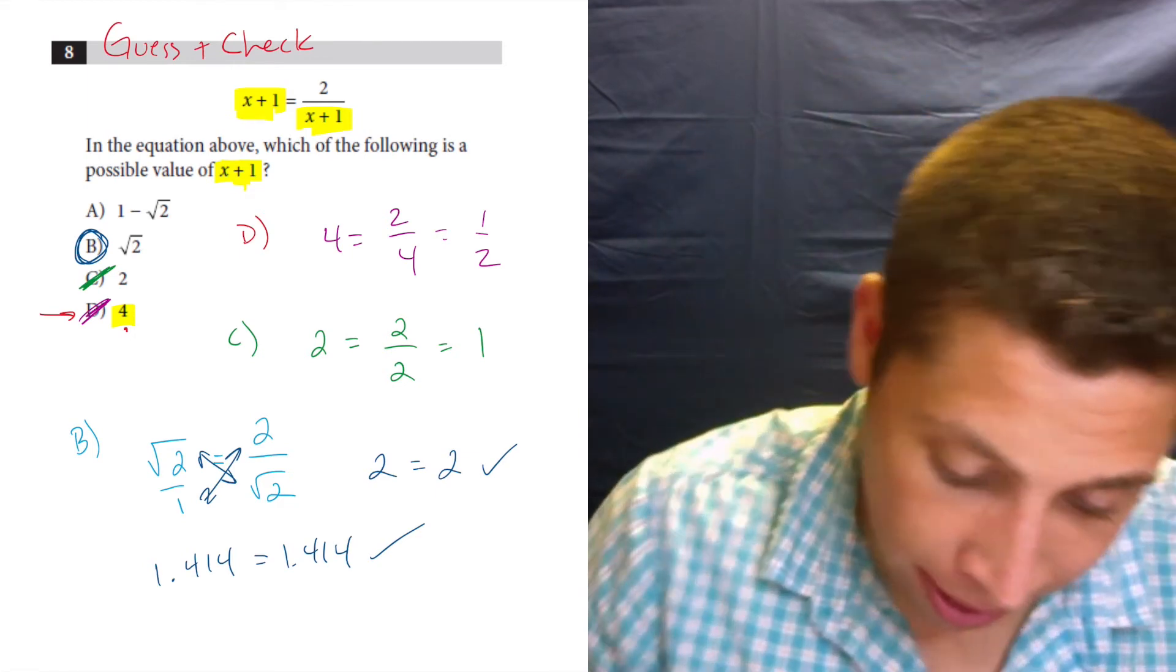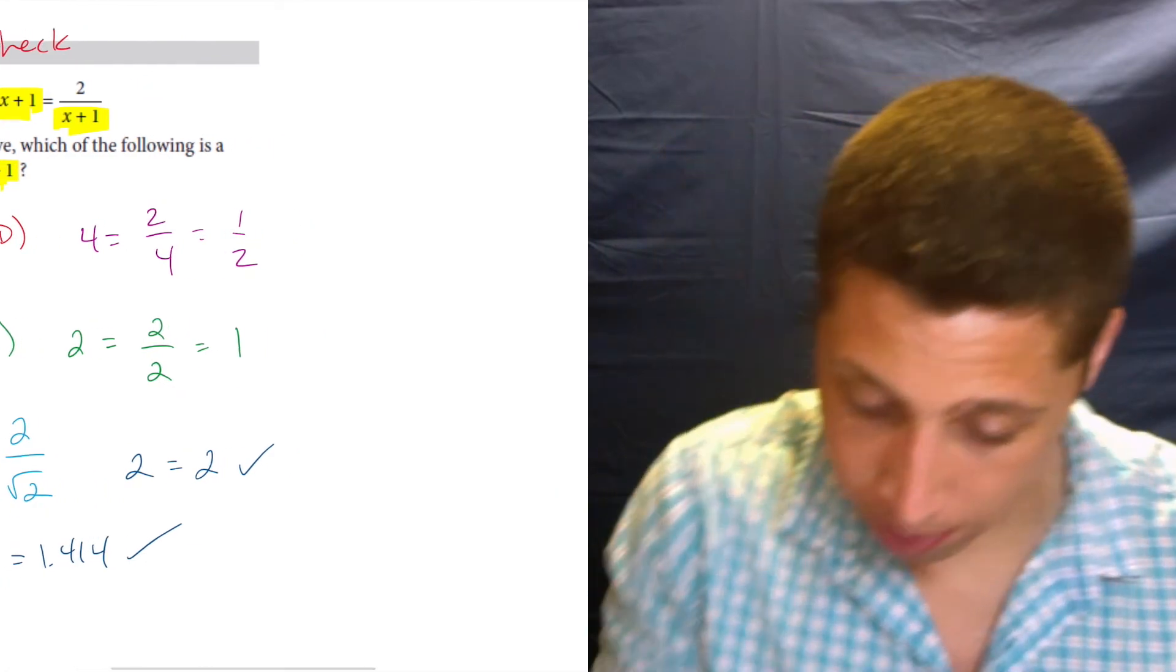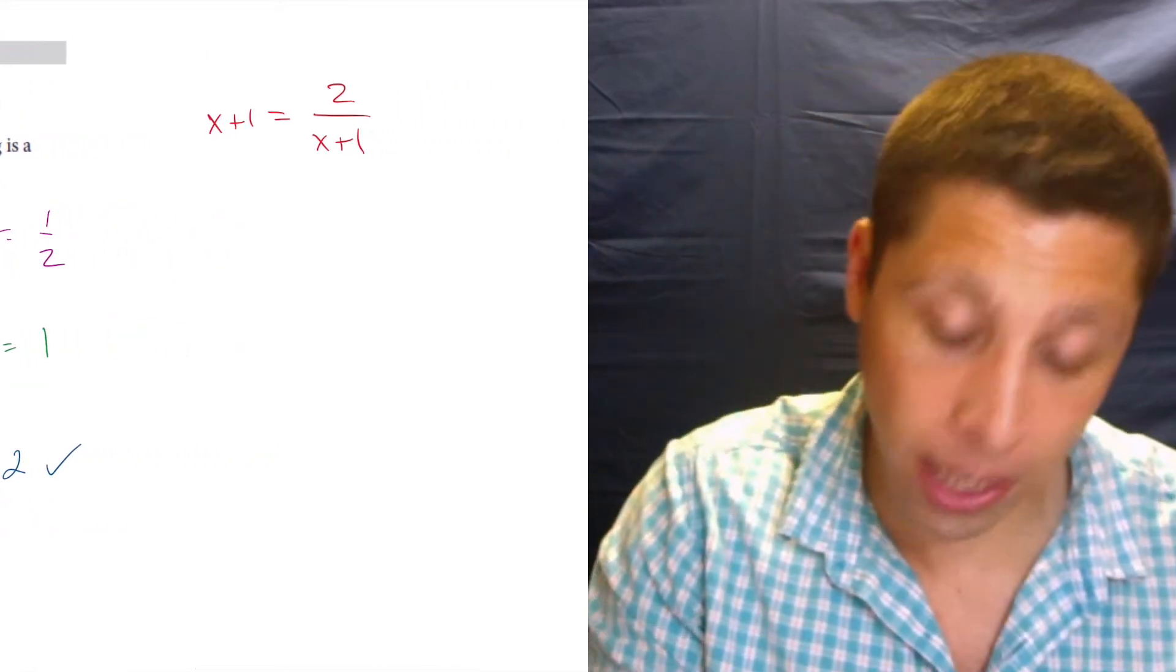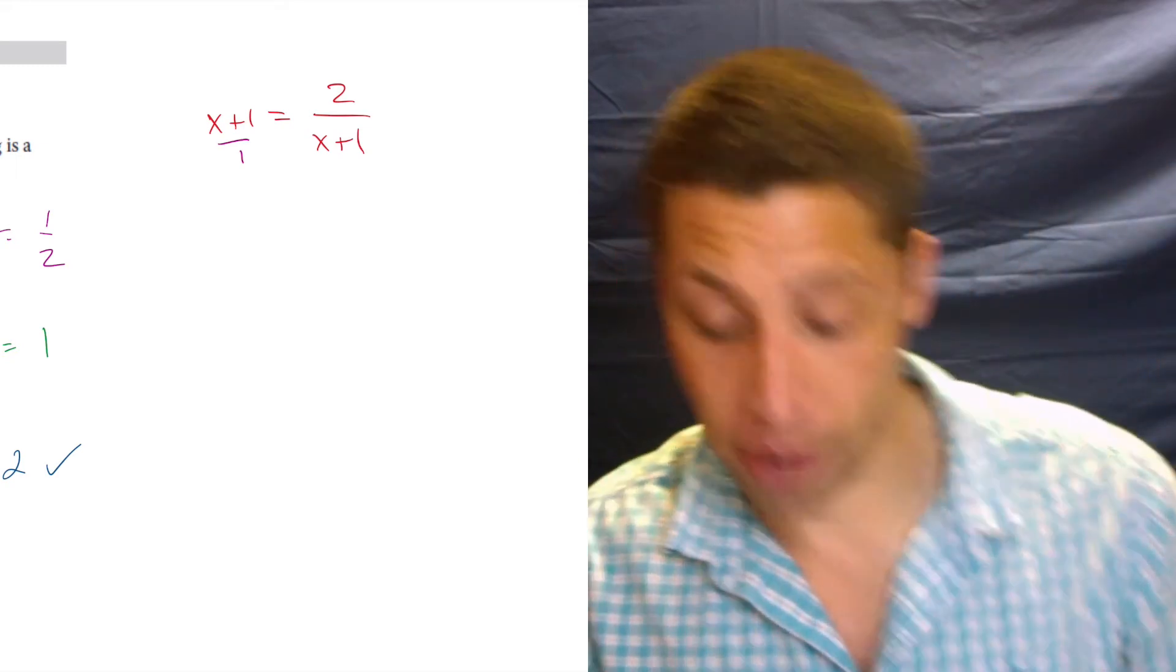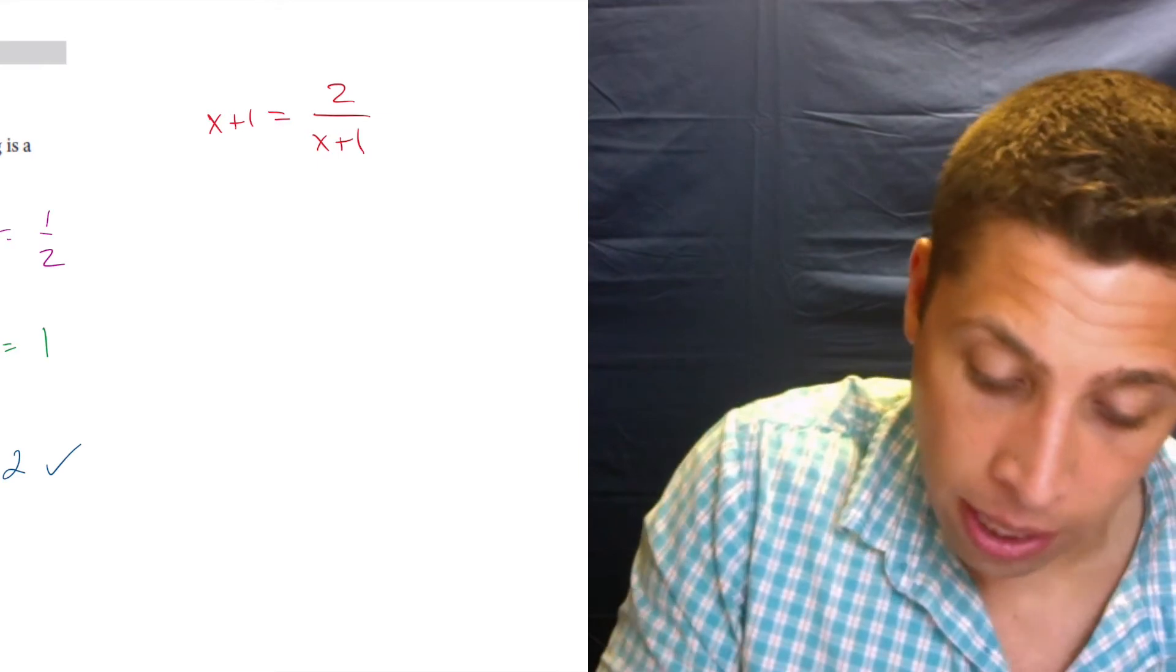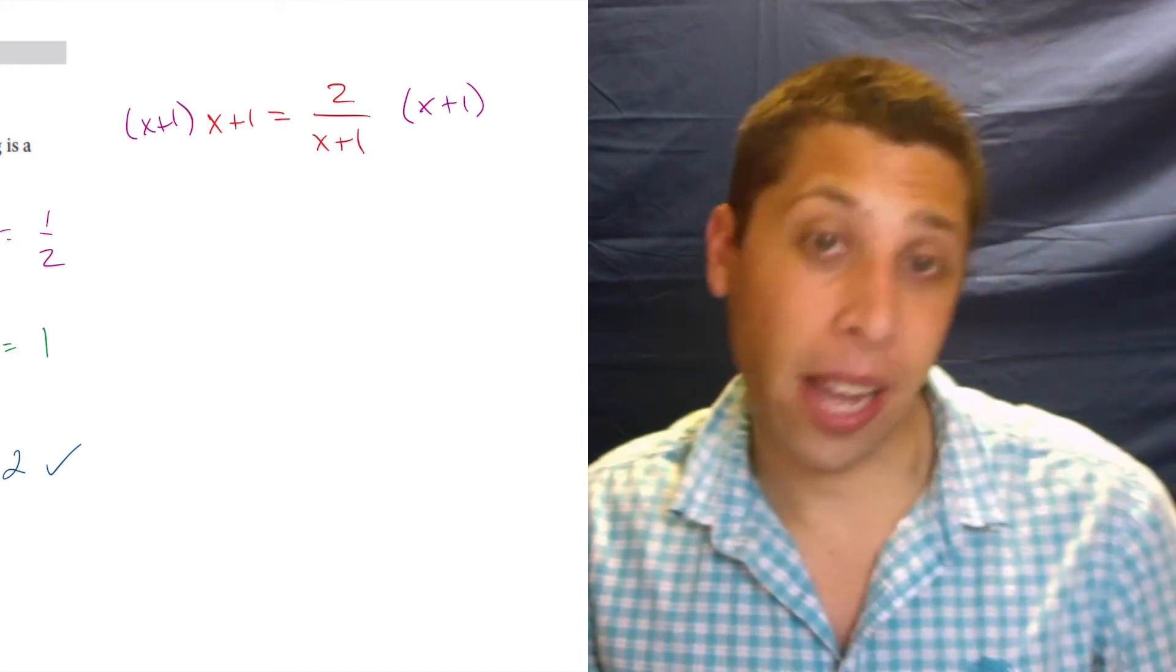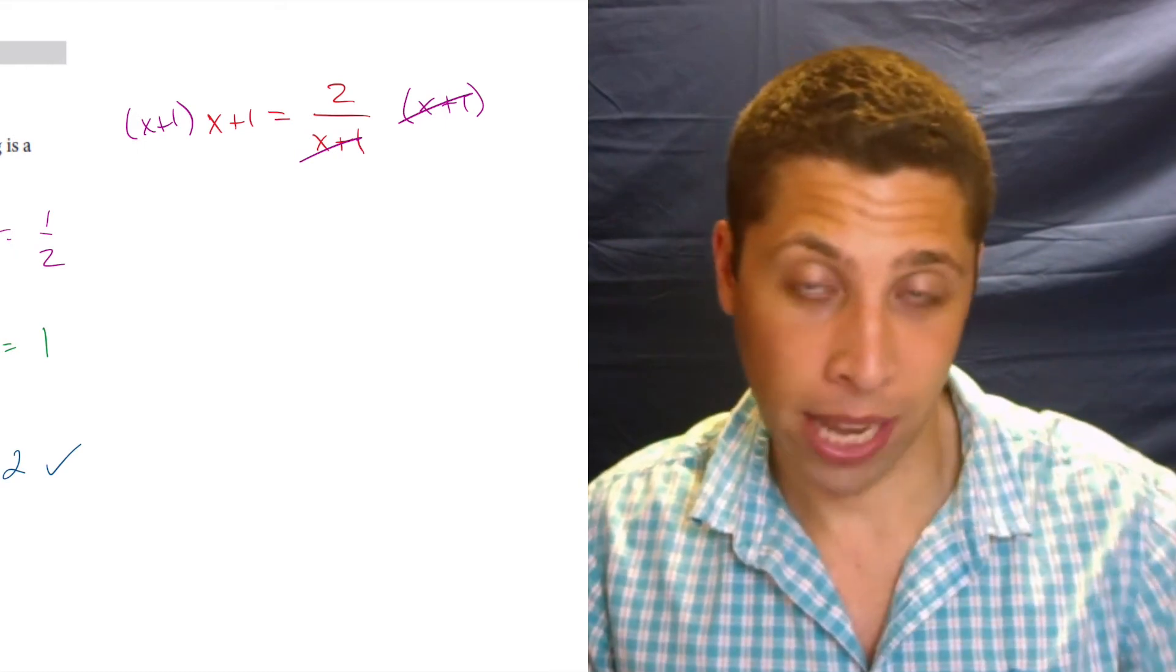Now, if you want to do the algebra, if you really insist, fine. I don't want to do it, but I'll do it for you. X plus 1 is equal to 2 over X plus 1. Okay. Well, I would do the same thing I just did with the radical twos. I would pretend that this is a fraction. I would cross multiply. Another way to think about it actually is if I wanted to get rid of fractions, I use multiplication to do that. So I would multiply both sides by X plus 1 because a term on the top and a term on the bottom cancel out.